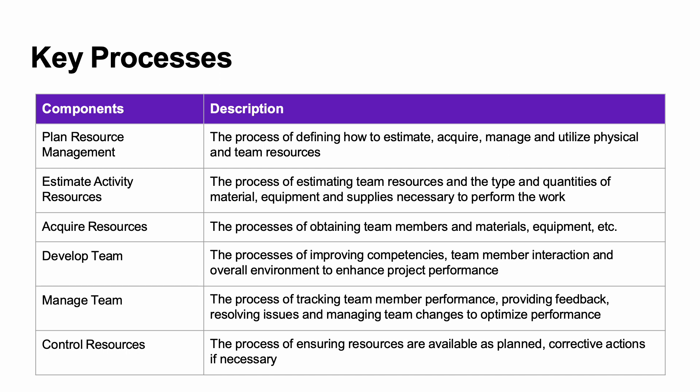Controlling resources ensures that human, material, or equipment resources are available when required, and that corrective actions are taken if necessary. For example, you don't want materials delivered to a site too early — they just sit and risk being stolen — but if they arrive too late, it affects your schedule. It's about managing resources so they're there when needed, and understanding how to rectify issues when they're not.